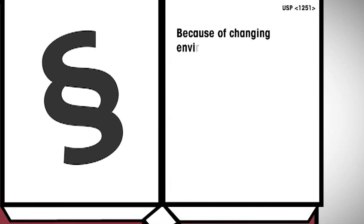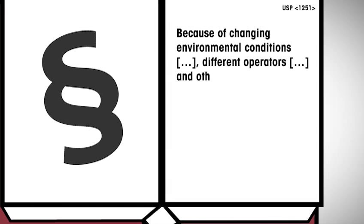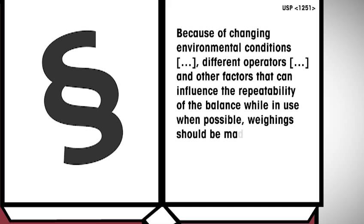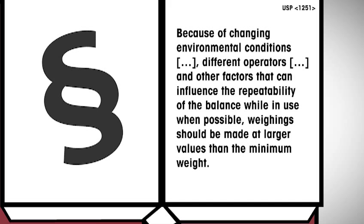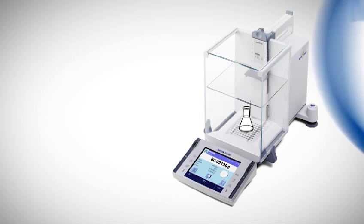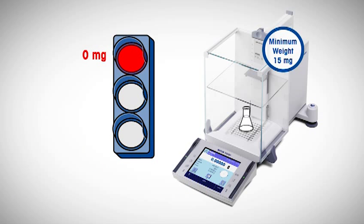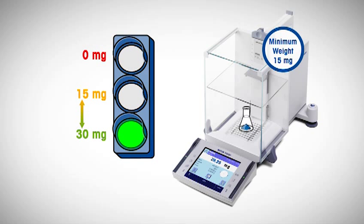Because of changing environmental conditions, different operators, and other factors that can influence the repeatability of the balance while in use, weighing should be made at larger values than the minimum weight when possible. It is therefore recommended to use a safety factor, which ensures that the smallest net weight is sufficiently larger than the minimum weight determined at a particular time by a particular person.